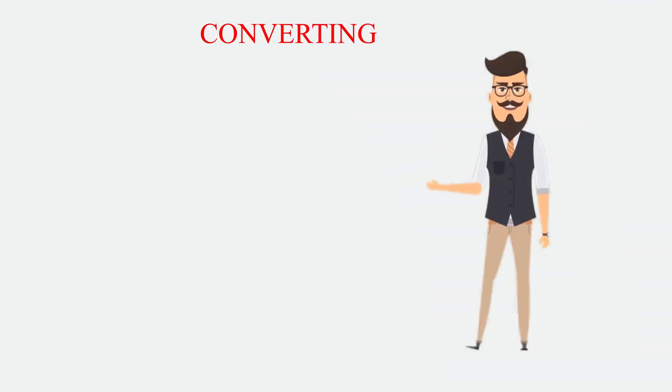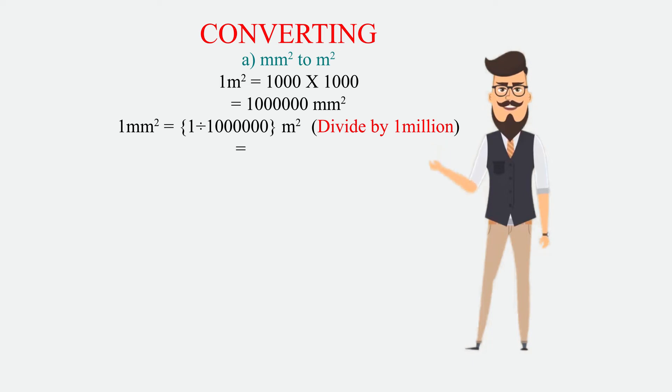Converting: a) mm squared to m squared. 1 meter squared equals 1,000 times 1,000 equals 1,000,000 millimeters squared. 1 millimeter squared equals 1 divided by 1,000,000 meters squared.